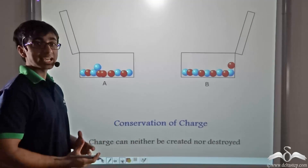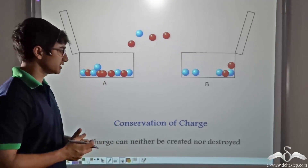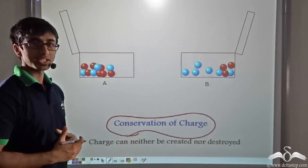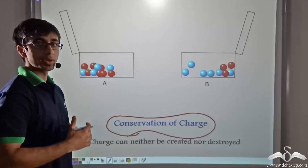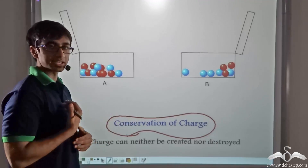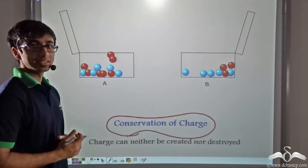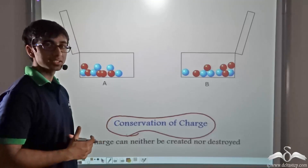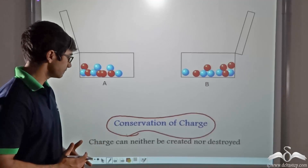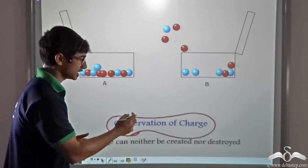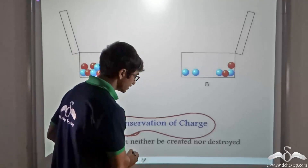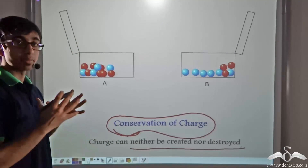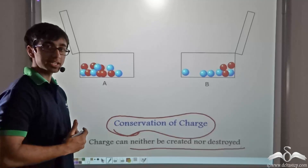We can derive the same analogy in the case of charges and say that charges are conserved. That is, in any transaction of charges between two bodies — where a body gives away electrons or accepts electrons — charges remain conserved. The total number of negative and positive charges of both bodies combined remains the same. This is the conservation of charges: charges can neither be created nor destroyed; they are always conserved in any transaction of charges between one body and another.